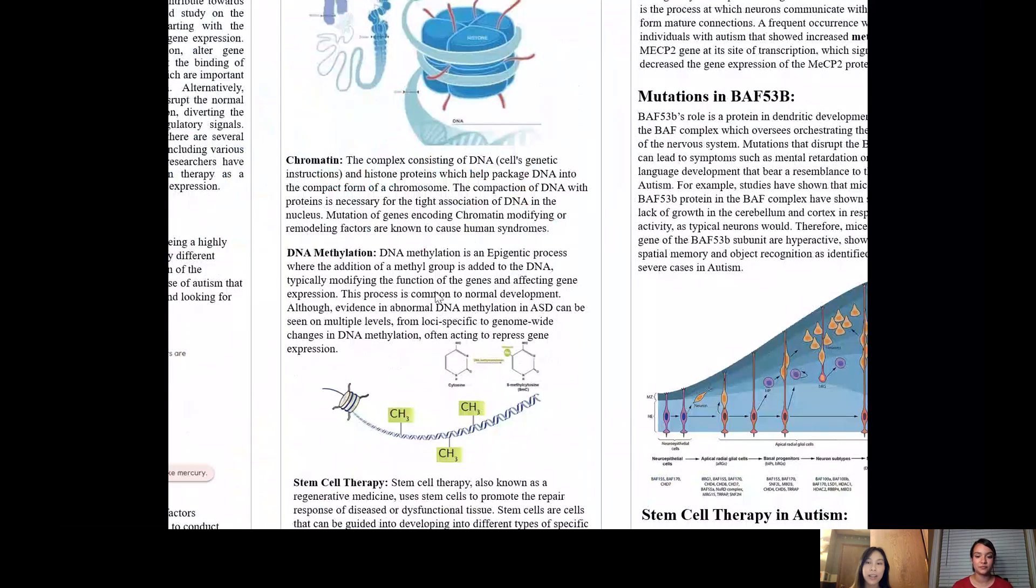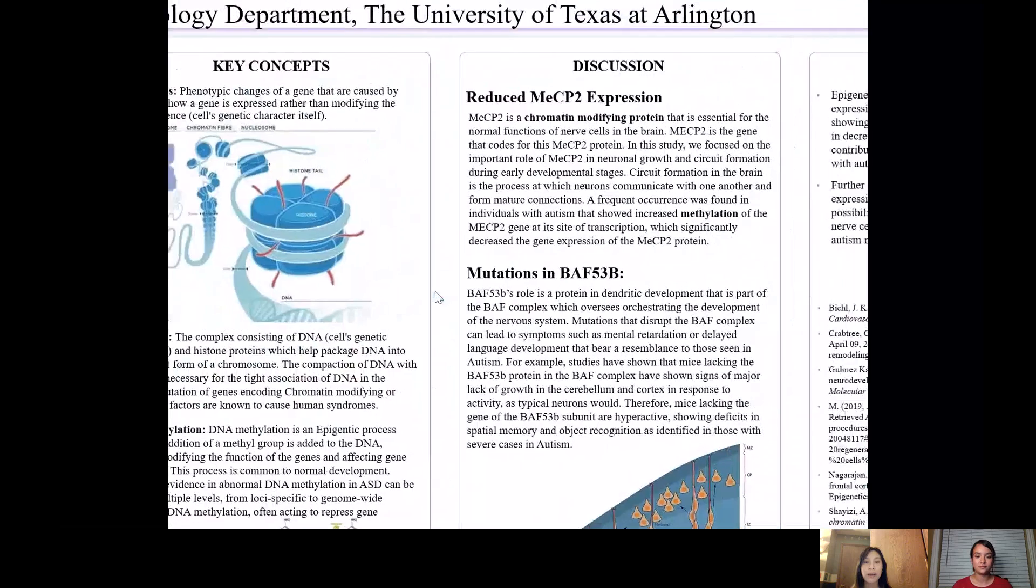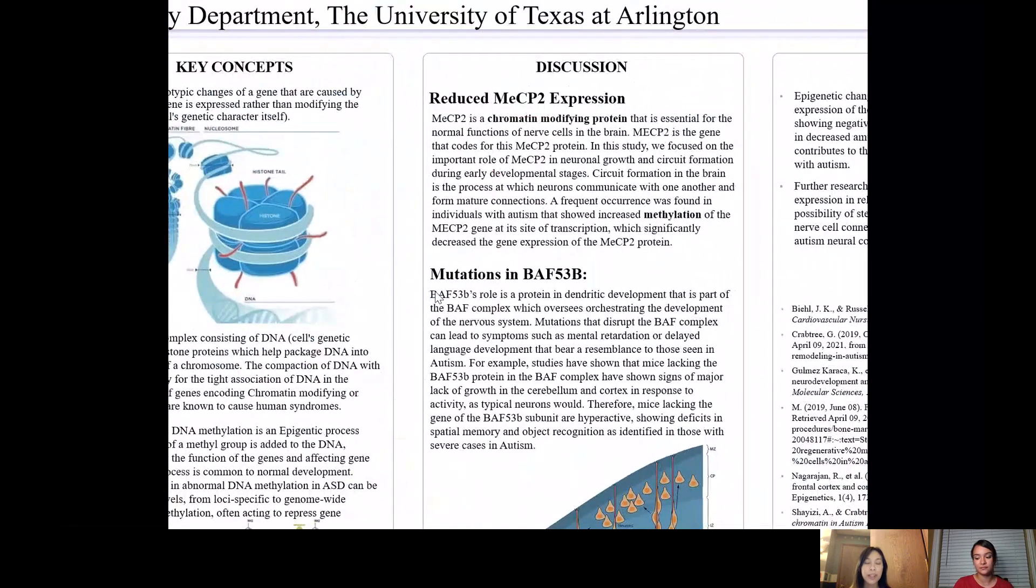with our MeCP2 gene, the extra methyl groups served as a disruption in the production of the MeCP2 protein. And so this is just one of many other examples of how epigenetics is affecting an important brain cell protein.